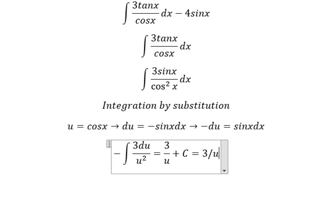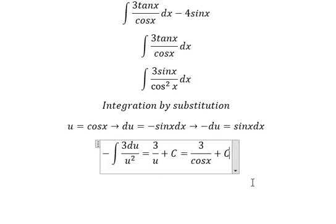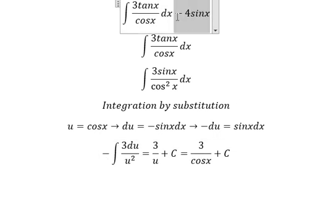For u, that is cosx. Now we combine the answer in here and we can get the final answer: I = 3/cosx - 4sinx + C.